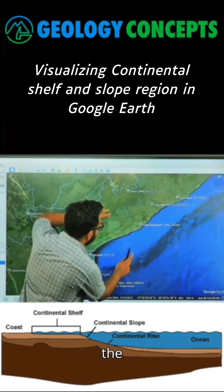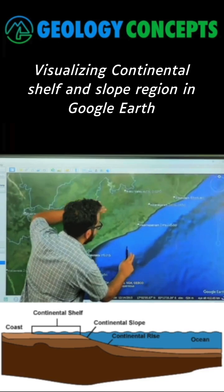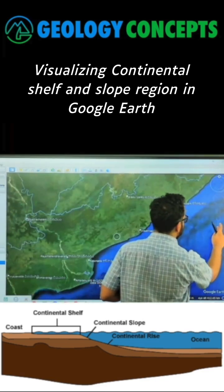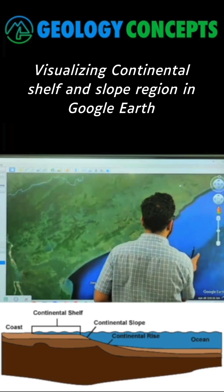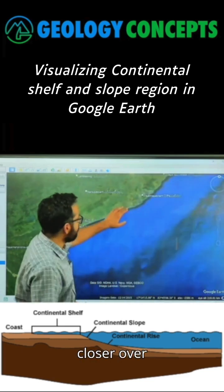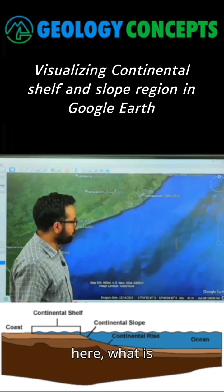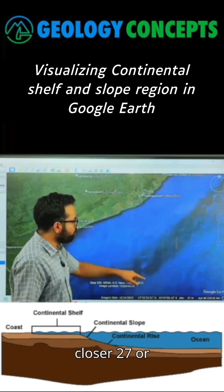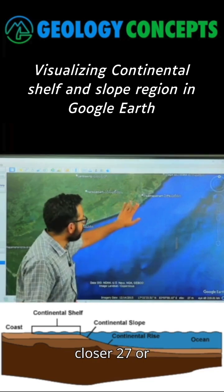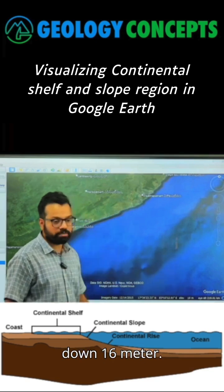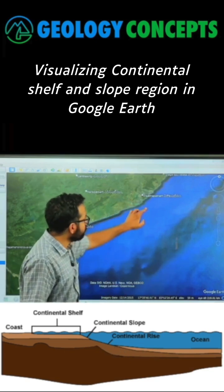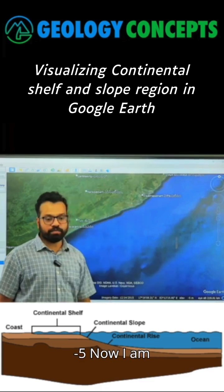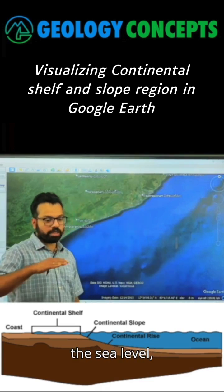If I come closer over here, what is the elevation? 41 meters. If I come over here closer, 27. 16 meters. If I come over here, minus 5. Now I am going below the sea level.